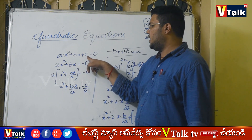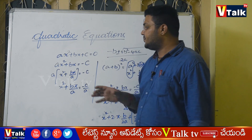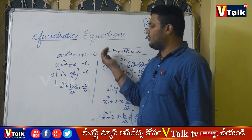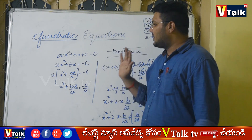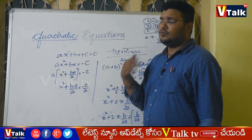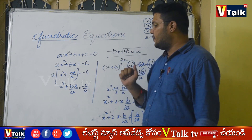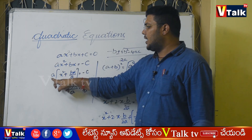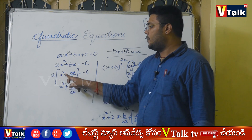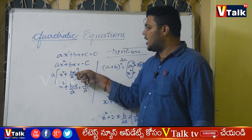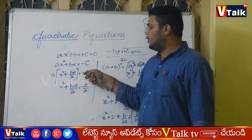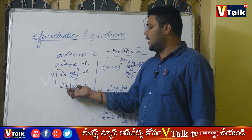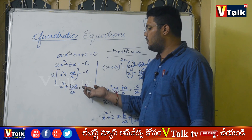Starting from the general form ax squared plus bx plus c equal to 0, the first step is to move the constant term to the other side: ax squared plus bx equal to minus c. Then take the coefficient of x squared as common and bring it outside, giving x squared plus bx by a equal to minus c by a.